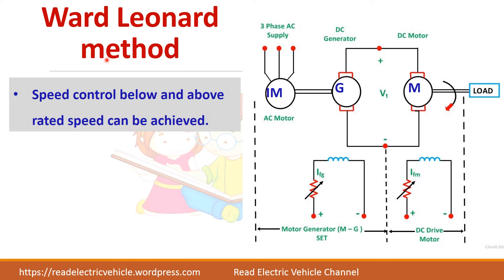The Ward-Leonard method looks a bit complicated but is very easy. It was used in earlier days, before the invention of power electronic devices. This motor here is the motor whose speed we want to control. The two techniques are: armature voltage control for below base speed, and field control for above base speed. By varying the field, you can control the speed of this motor above rated speed. For below rated speed, instead of putting a resistor to control the voltage applied to the motor, we have a generator which will supply the required voltage to this motor.